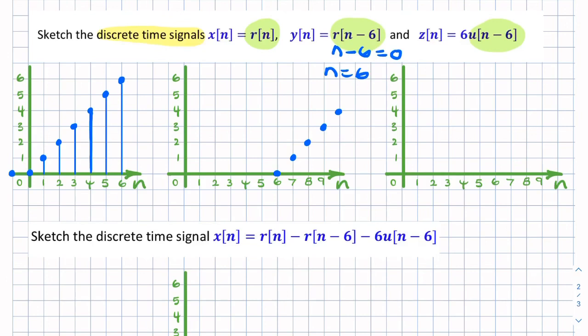So at n equals six, that's when our ramp starts. So it starts going up at that point. And all values before that, it's zero. So this value has to be zero. That's where the ramp actually starts. So we can draw a discrete time signal like that.